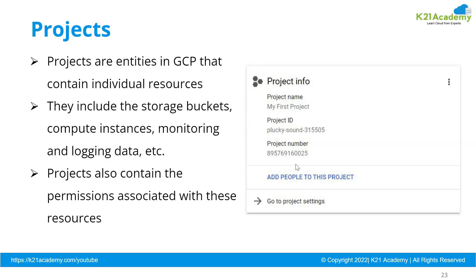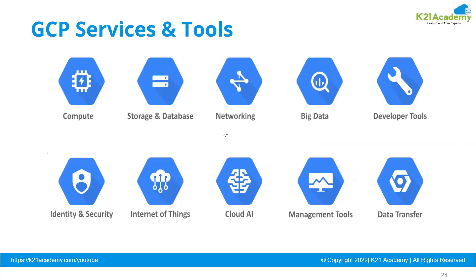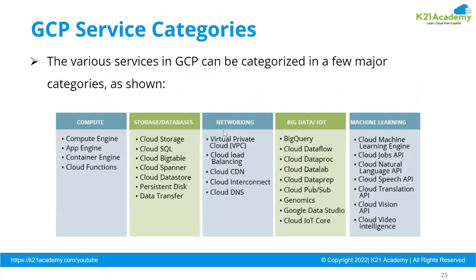Projects is where we create resources. Every project comes with three attributes: the project name, the project ID, and the project number. Resources we create inside the project include any GCP resource — compute, storage, networking, big data, cloud AI, management tools, etc.